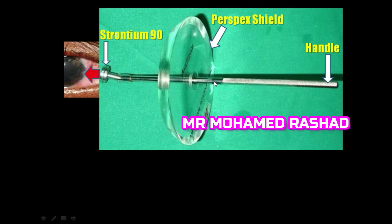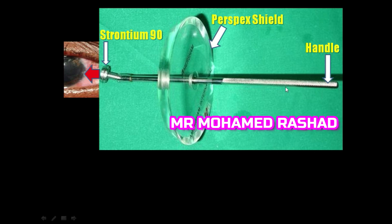This is the sign of radioactivity. The parts of the strontium-90 applicator include the emitter, which contains the strontium-90 and is placed topically on the part we need to treat with beta radiation. There is also the specx shield, which protects us from any unnecessary radiation, and the handle.